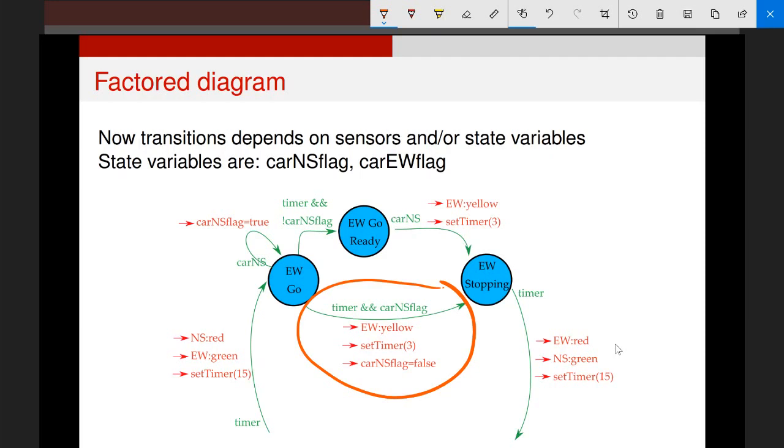What you should also notice is that this transition to the ready state has changed. Rather than just checking whether the timer has triggered, we're checking that the timer has triggered and there is no car. That's what the exclamation mark means. It means that the flag, the state variable car north-south flag, is not true at that point. Why? Because if it is true we would go through this transition down here. It's only if it's explicitly not true that we move into this state.